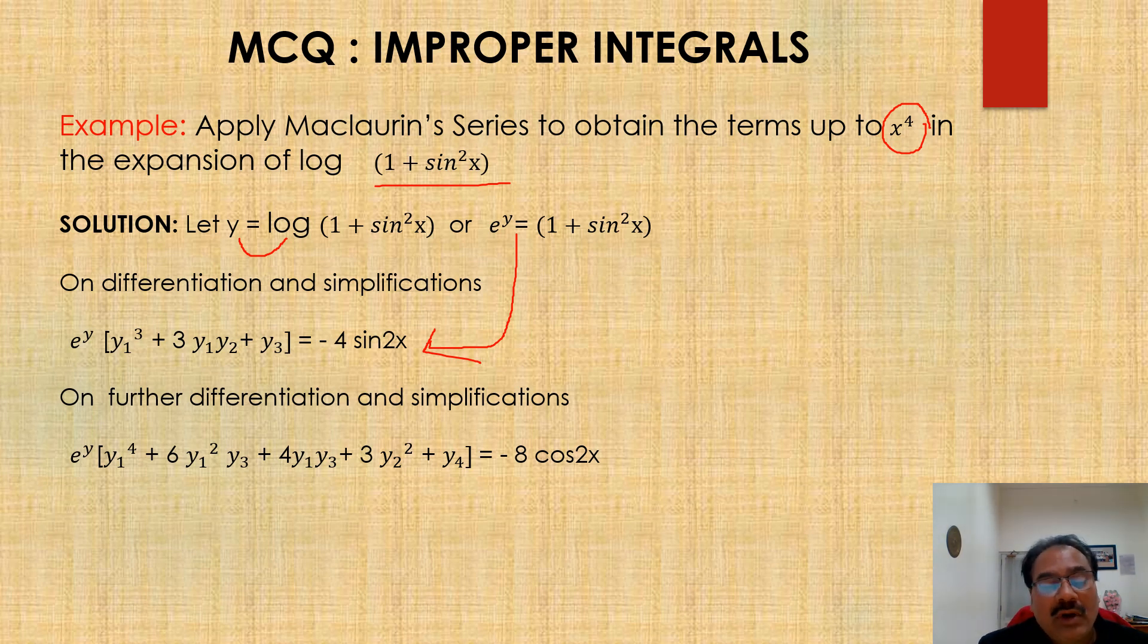So you have to write like this: e power y y1 cube plus 3 y2 y1 plus y3 is equal to minus 4 sin 2x. What you did? You did the differentiation. And after differentiation, you will be able to write like this.